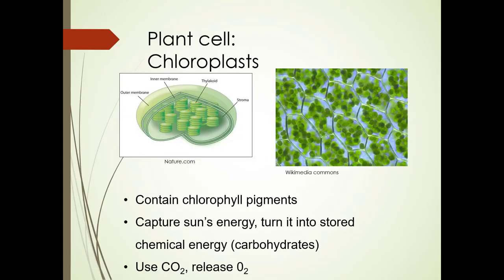Chloroplasts are where the chlorophyll pigments are contained. They capture the sun's energy, turn it into stored chemical energy or carbohydrates, use carbon dioxide, and release oxygen.